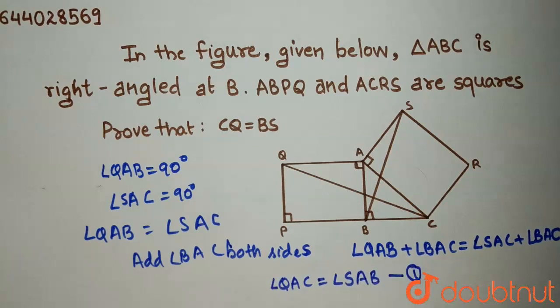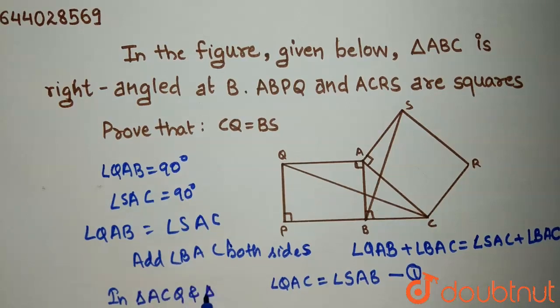Consider this to be equation 1. Now consider the triangles: in triangle ACQ and triangle ASB. So considering both of these triangles,